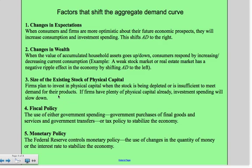The fifth is monetary policy. Now we're talking about the Federal Reserve and the use of changes in the quantity of money or the interest rate to stabilize the economy. We've touched on that in a couple of discussions over the past two weeks. We're going to get into much greater detail on number four and five. For now, it's important to remember that those are two of the five factors that shift the aggregate demand curve.